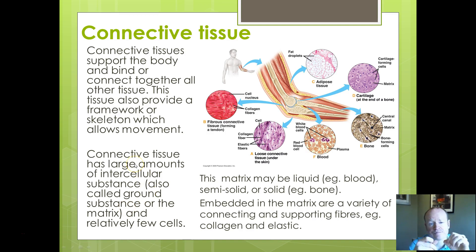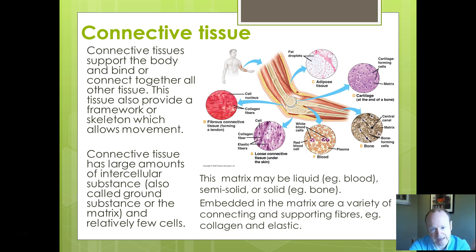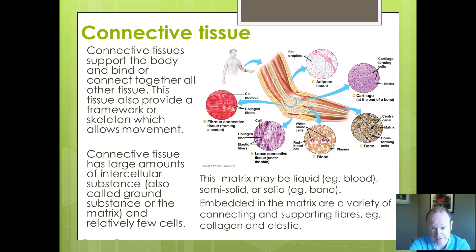Connective tissue helps to bind together and connect the whole body. It's broader than that, though — connective tissue has a lot of intercellular material without necessarily having lots of cells. Blood is an example: the plasma and the cellular components together make a connective tissue. Similarly, bone and cartilage are connective tissues, as well as loose connective tissue that binds everything together and fits in between other tissues. You've got collagen, elastic fibres, and so on — connective tissue is very important.